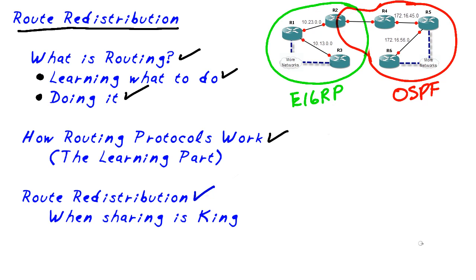So now with R2 running EIGRP and OSPF, EIGRP is feeding all the routes to R2, and so is OSPF. So there's one router that knows the entire picture, like the map of the entire network. And what we're going to train R2 to do is share.